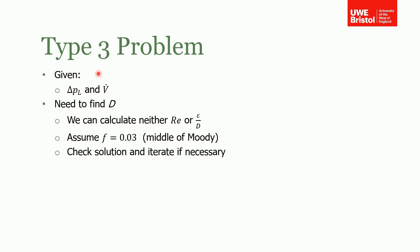For the Type 3 problem, it's a bit more tricky again. If you know the pressure loss and the volumetric flow rate, you don't know the diameter — that's what you need to find. If you don't know the diameter you can't calculate the Reynolds number or the relative pipe roughness, so it's really hard to find the friction factor. The way to solve this is to start by assuming the friction factor is 0.03, which is right in the middle of the Moody diagram. Once you assume this friction factor you work out a pipe diameter, then with that diameter you work out a Reynolds number and velocity, and keep iterating until you converge on the solution.